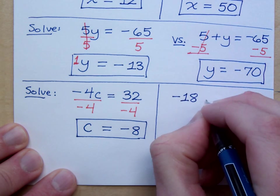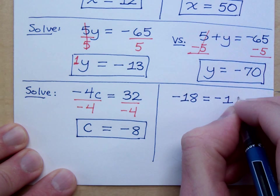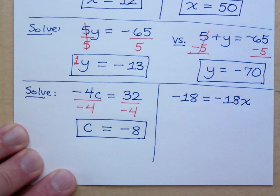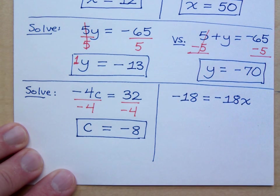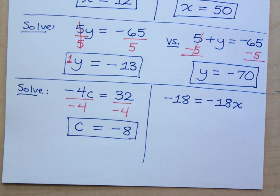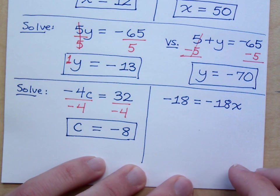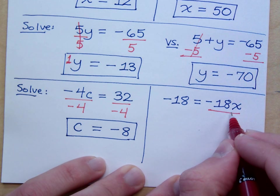Negative 18 is equal to negative 18x. What's wrong? I'm doing it in red? So you're still looking for x. I want to know what is the solution? What's the replacement of the variable that makes it true? So how do I do this? How do I get x by itself? Divide by negative 18.